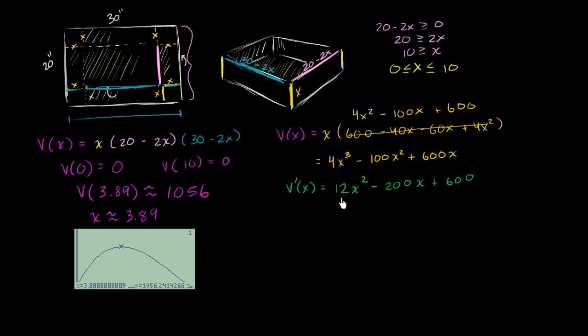And so now we just have to figure out when this is equal to 0. So we have to figure out when 12x squared minus 200x plus 600 is equal to 0. What x values get my derivative to be equal to 0? When is my slope equal to 0?